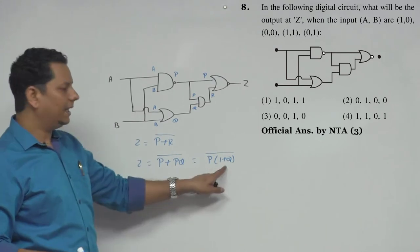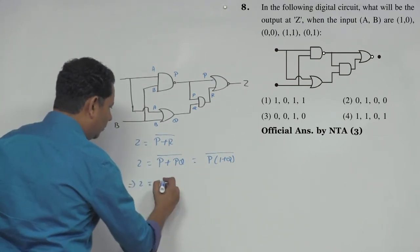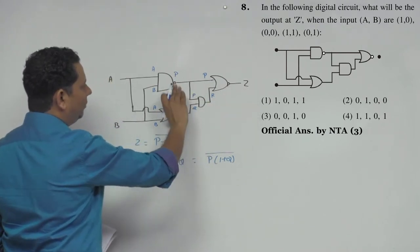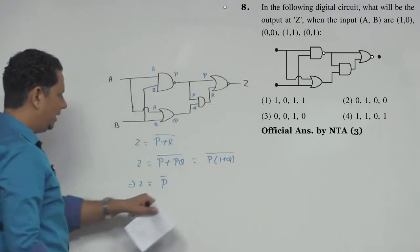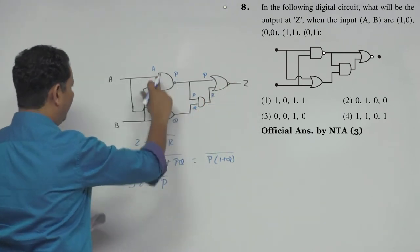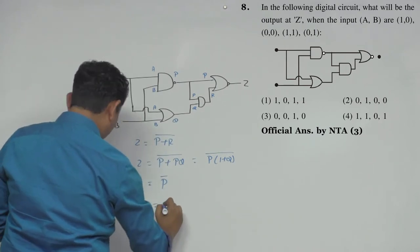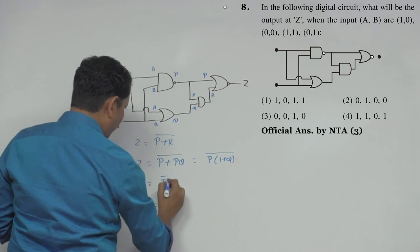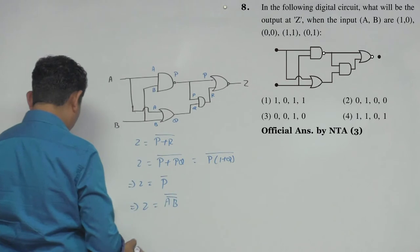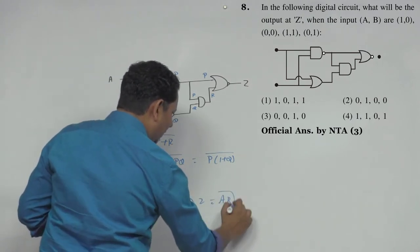Now, 1 plus Q-bar equals 1, so this simplifies to P. Z equals P, which implies Z will be equal to A-bar B-bar.